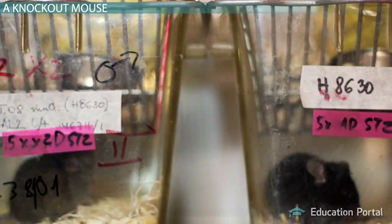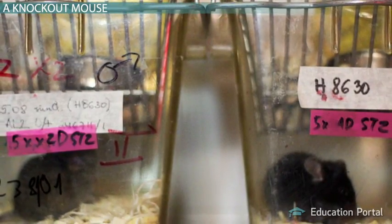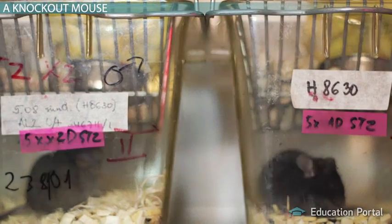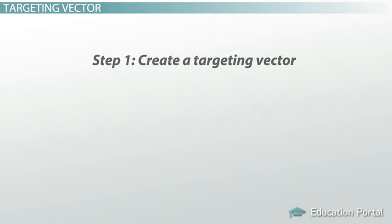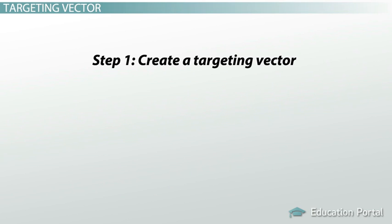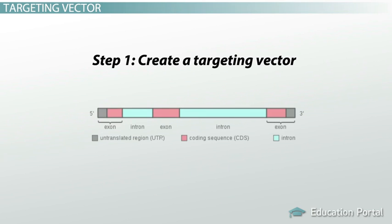Tens of thousands of genes have been knocked out in mice, but that still leaves plenty more to be investigated. Step one is to create a targeting vector. A vector is just a way of getting something somewhere. A targeting vector, then, is something that is targeted for a specific area — in this case, creating a piece of DNA that can be targeted to the right place in the genome, right at the gene of interest.